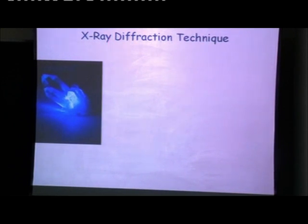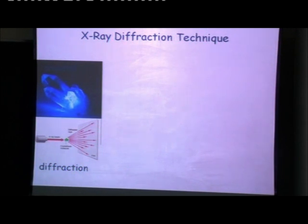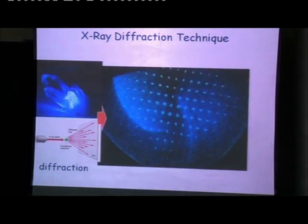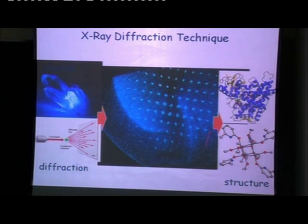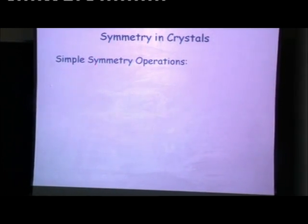The technique works as follows: you take X-rays, pass them through the crystal, and when the Bragg condition is satisfied you will see diffraction peaks. From that you get the electron density, and then the full structure. We also need to understand the symmetry of crystals, as symmetry elements are fundamental to describing the crystal structure.